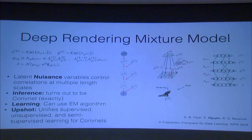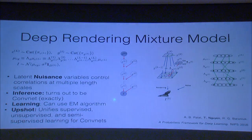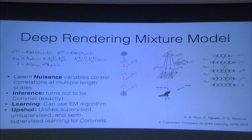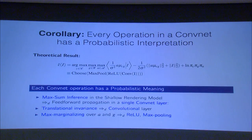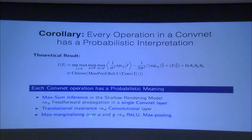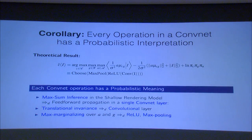What we're saying is that convolutional neural networks are not just black boxes — they are actually the right inference algorithm for this particular model, quantified by these equations. We can quantify everything and say that convolutional neural networks are a proper inference algorithm against this model. Every model has assumptions, and now we can criticize those assumptions as opposed to wondering what's going on in the black box. In terms of learning, we can now use the so-called expectation maximization — the EM algorithm — to unify several kinds of learning: supervised, semi-supervised, and unsupervised learning all in the same framework. Every operation in a convolutional neural network now has a probabilistic interpretation, including the nonlinearities and max pooling.